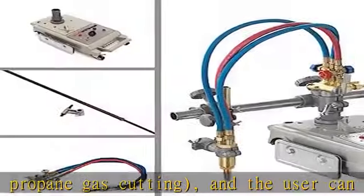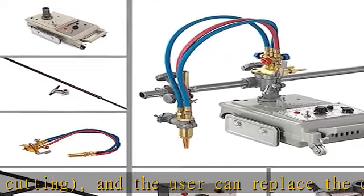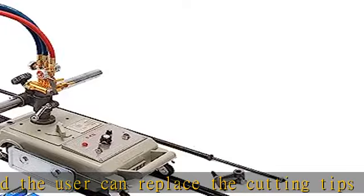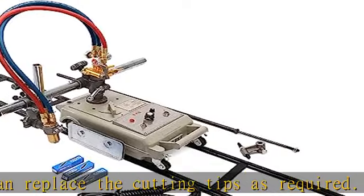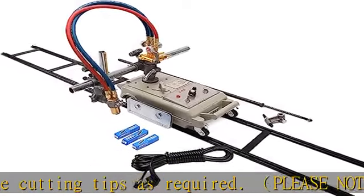The CG130 track torch gas pipe cutting comes with 3 of 70 centimeter tracks. Besides, the guide rails provide interface ends for the extended track.